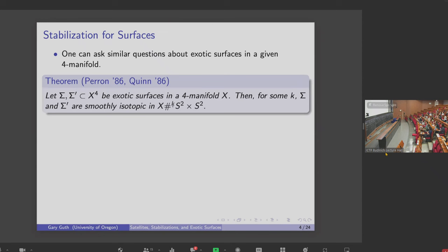If I have exotic surfaces Sigma and Sigma prime, then I can do a similar thing. I can stabilize the ambient four manifold. So the statement is if I take sufficiently many connected sums with S2 cross S2, these exotic surfaces will eventually become smoothly isotopic.